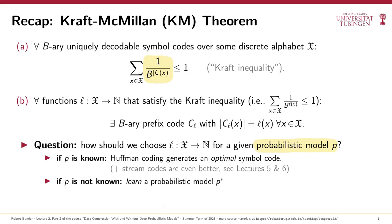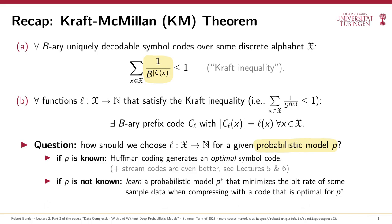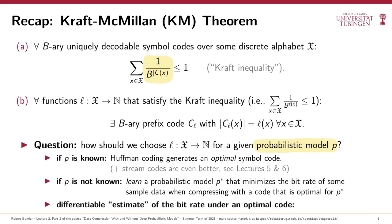Starting with the next video, we'll consider situations where we don't yet have a probabilistic model. Instead, we'll assume we only have some finite number of example data points — for example, a collection of images for image compression — and we'll want to fit or learn a good probabilistic model. We'll need to calculate the bitrate we'd get from a compression code optimal for some candidate model, then minimize this bitrate over many candidate models. Because we can't differentiate through the Huffman coding algorithm, we'll need a differentiable expression for the bitrate under an optimal code — that's the information content of a symbol or message under a probabilistic model.